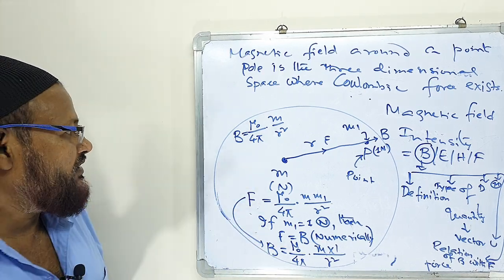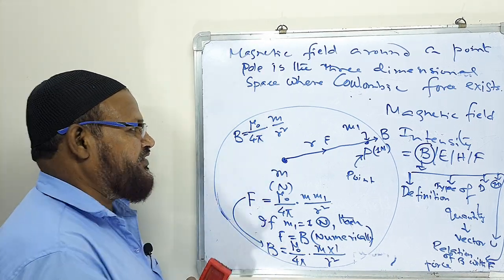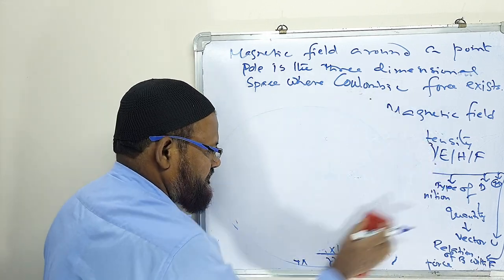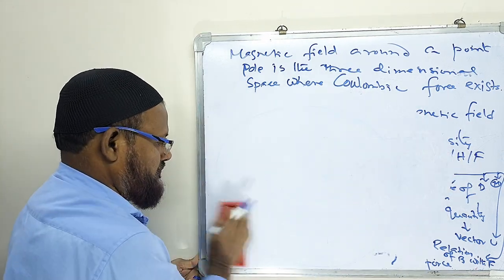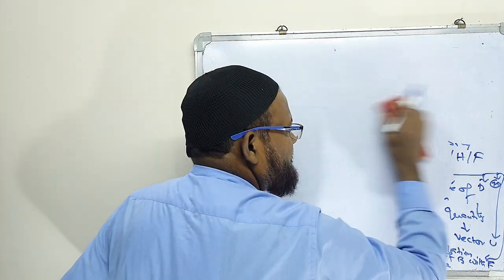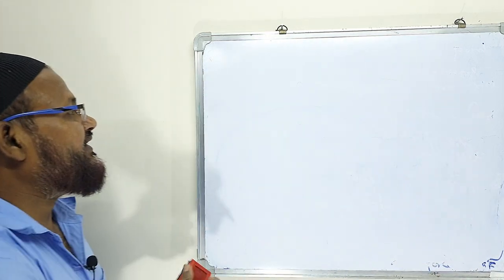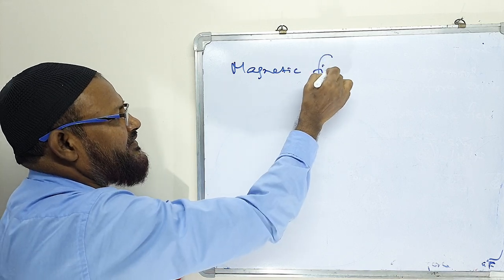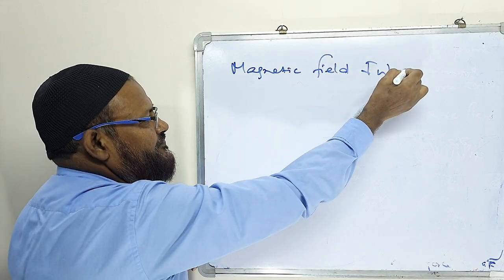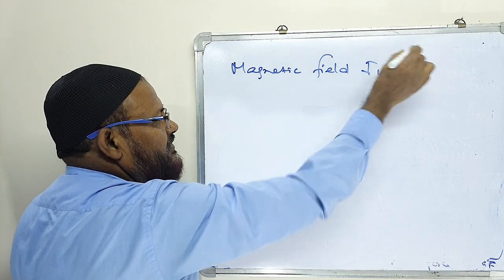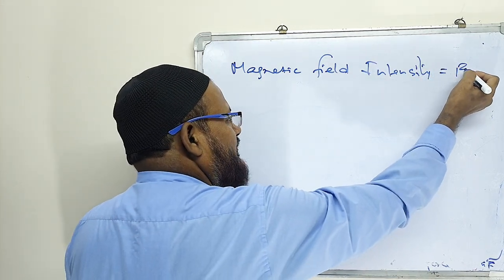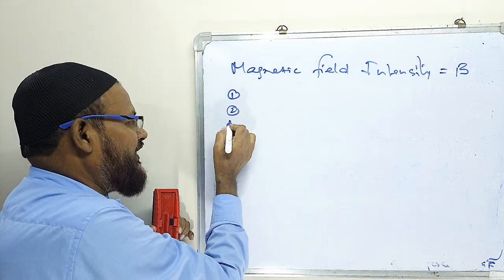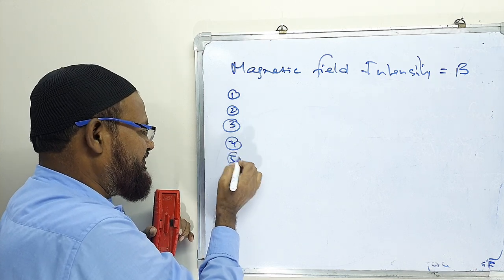Mu naught B equals mu naught by 4 pi M by R square. We will study magnetic field intensity under six points: 1, 2, 3, 4, 5, 6 points.